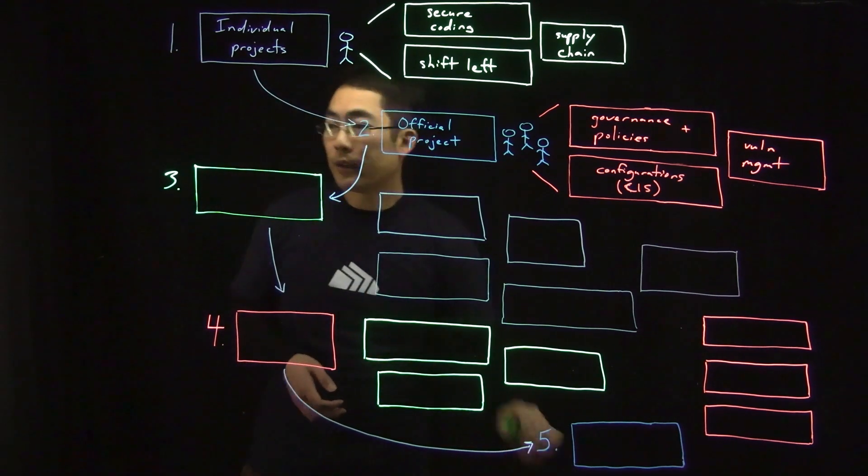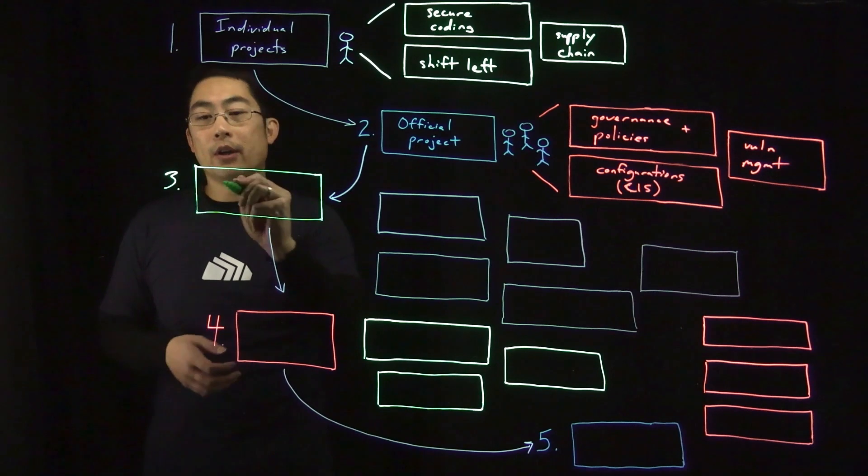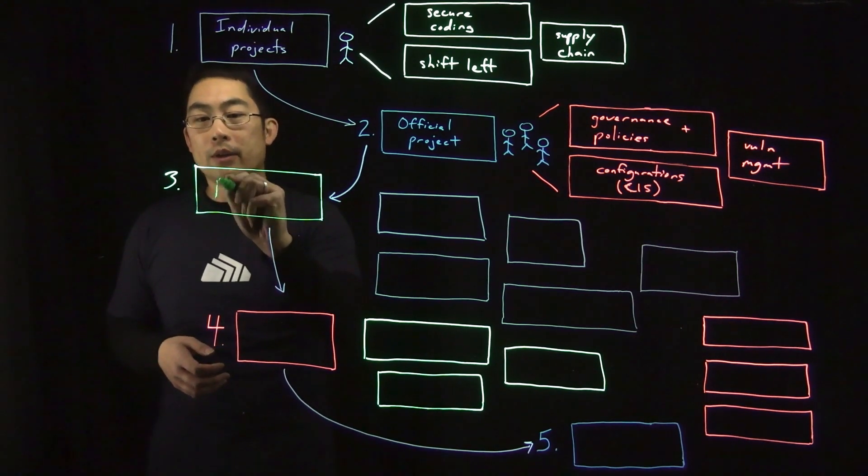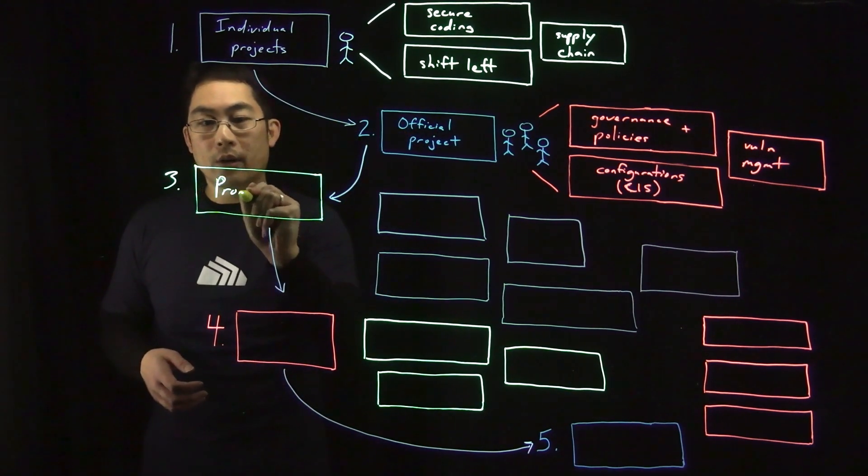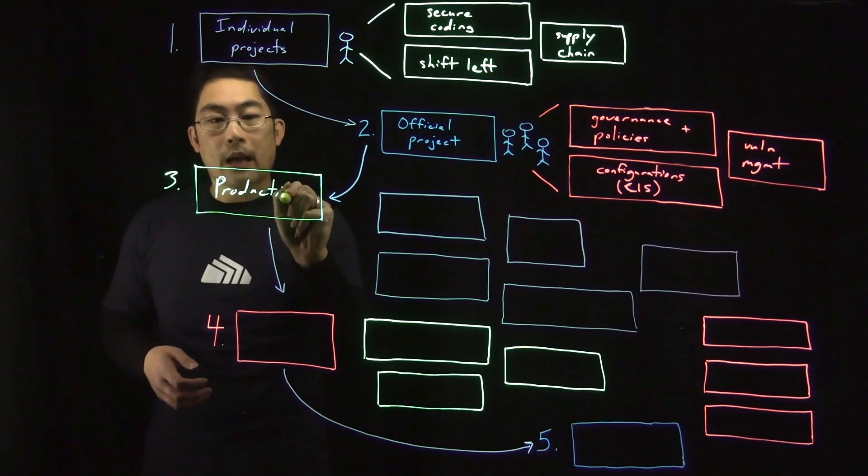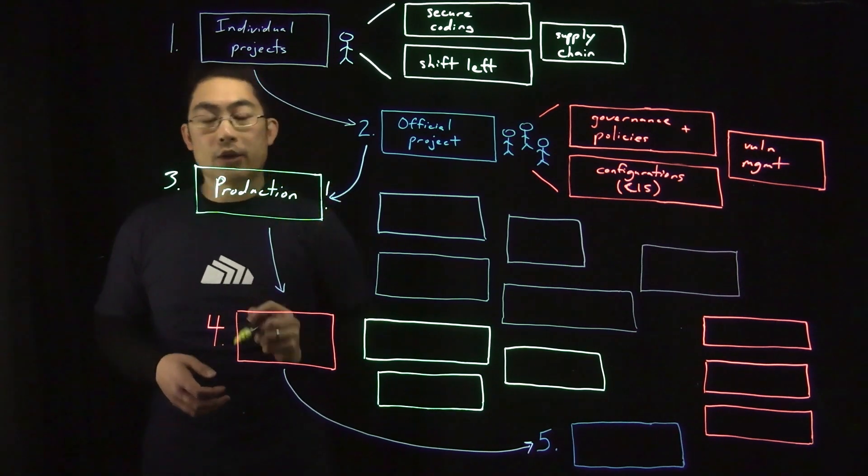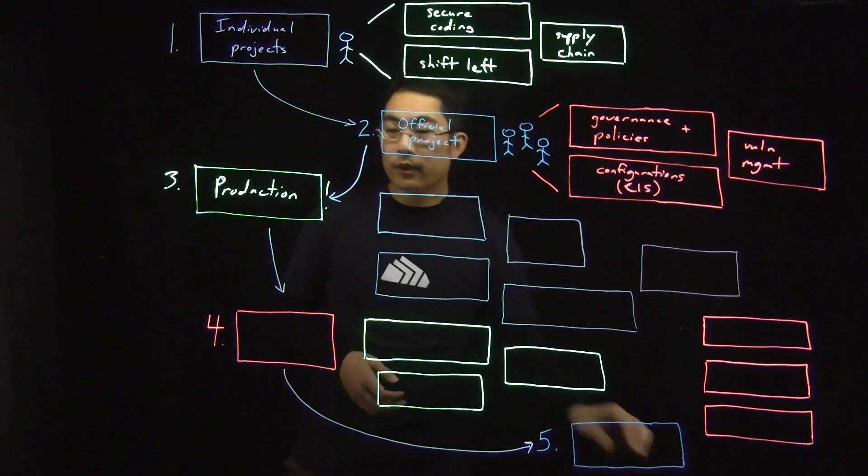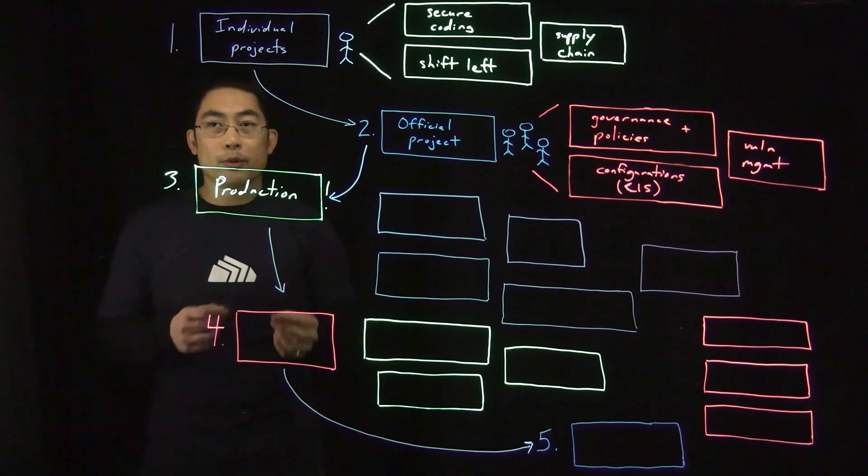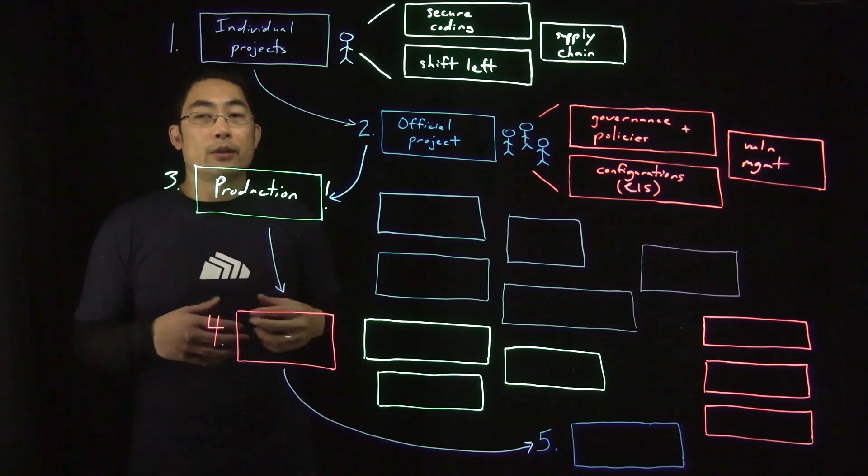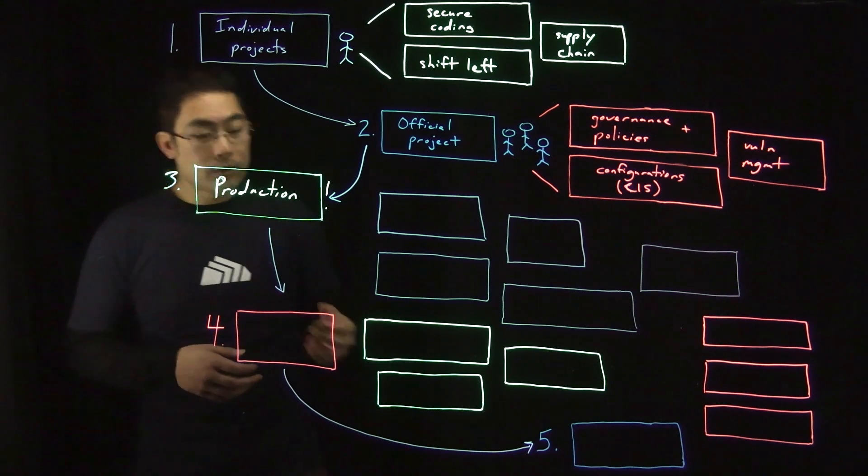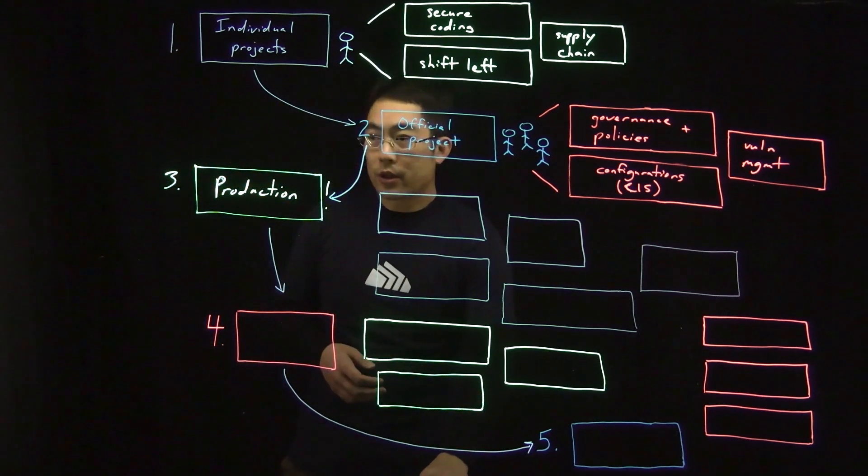The third stage really marks a significant milestone for anyone who is using containers in Kubernetes. And that's running your first application in production. This really unlocks the ability for multiple teams to utilize Kubernetes for many applications or to scale up applications. There's a lot of different considerations here.